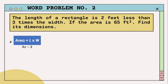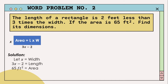Let's move on to word problem number two: the length of a rectangle is two feet less than three times the width. If the area is 65 feet squared, find its dimensions. Let x be the width of the rectangle and 3x minus 2 be its length, and the given area is 65 feet squared.